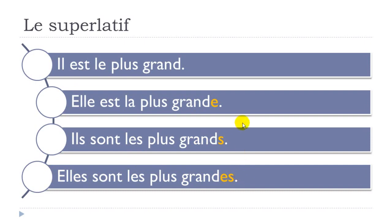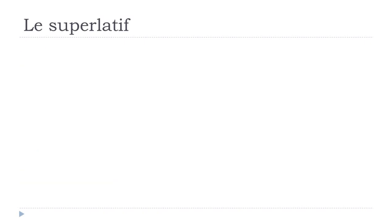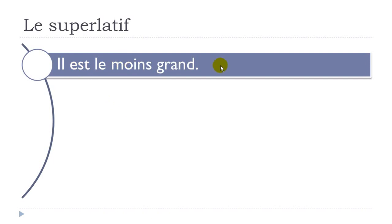With an adverb: 'il marche le plus vite' (he walks the fastest — vite means fast). For feminine: 'elle marche la plus vite'. The good news is that the adverb doesn't change — no feminine or plural ending needed. Just change the article: le/la/les.